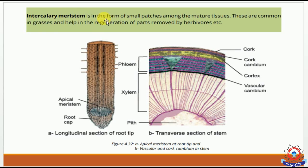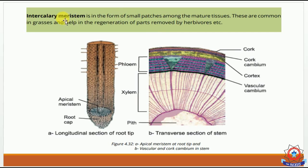Intercalary meristem is found in the form of small patches among mature tissues. These are common in grasses and help in the regeneration of parts removed by herbivores — this is why grasses regrow after animals eat them.